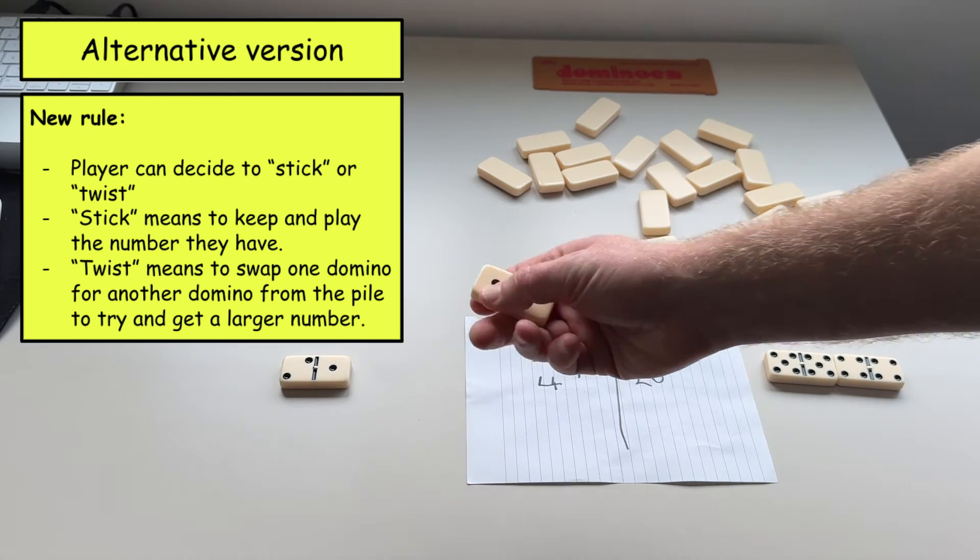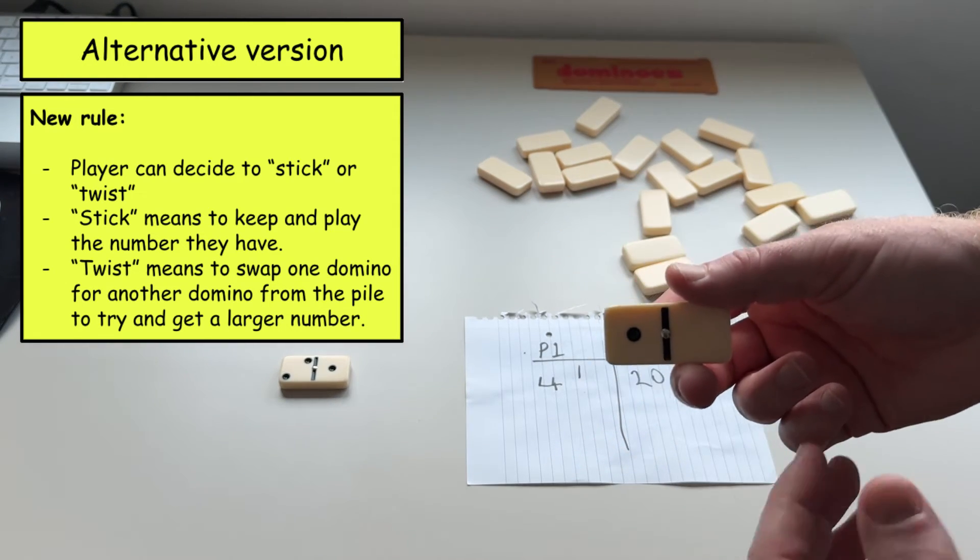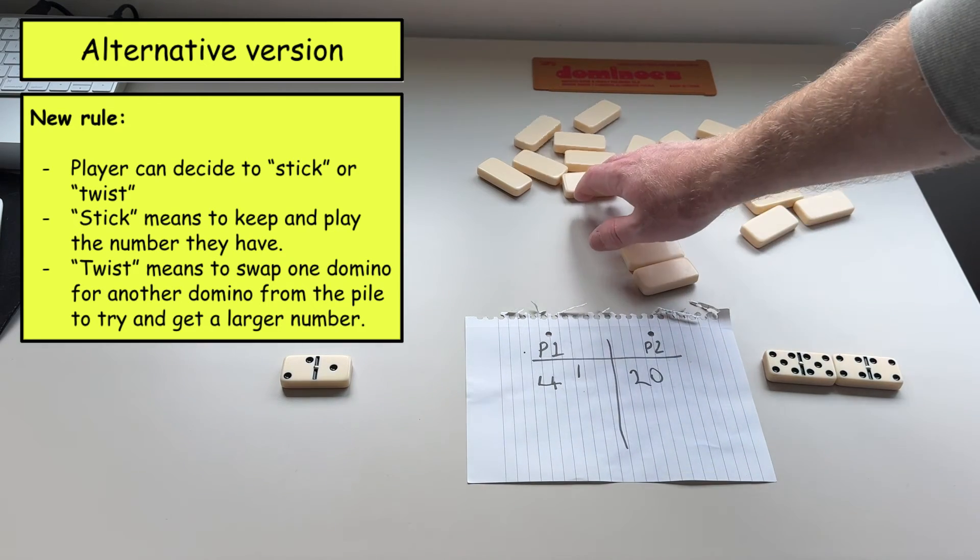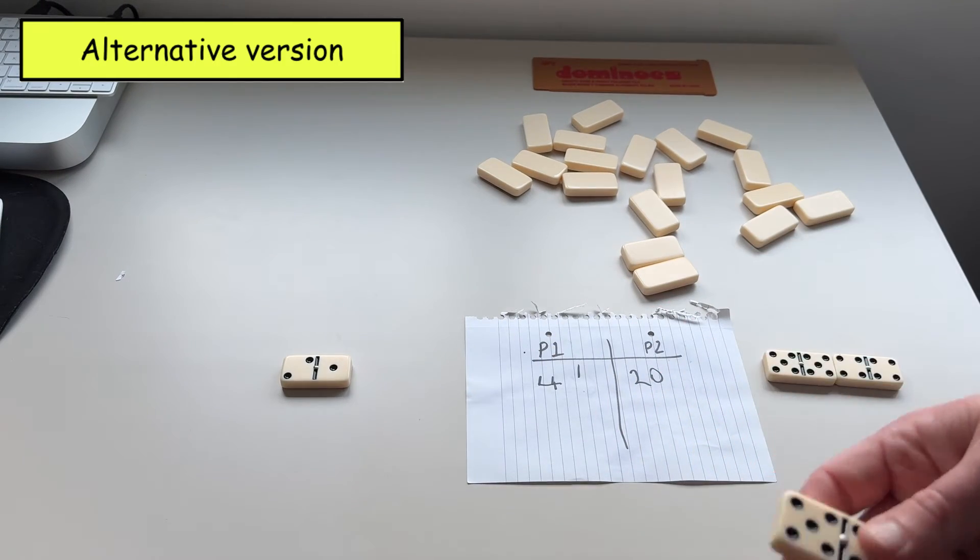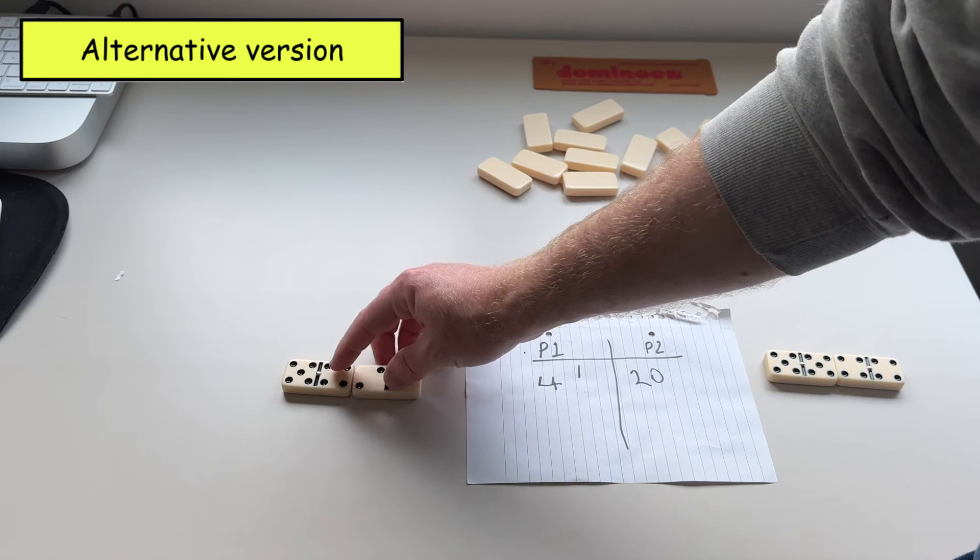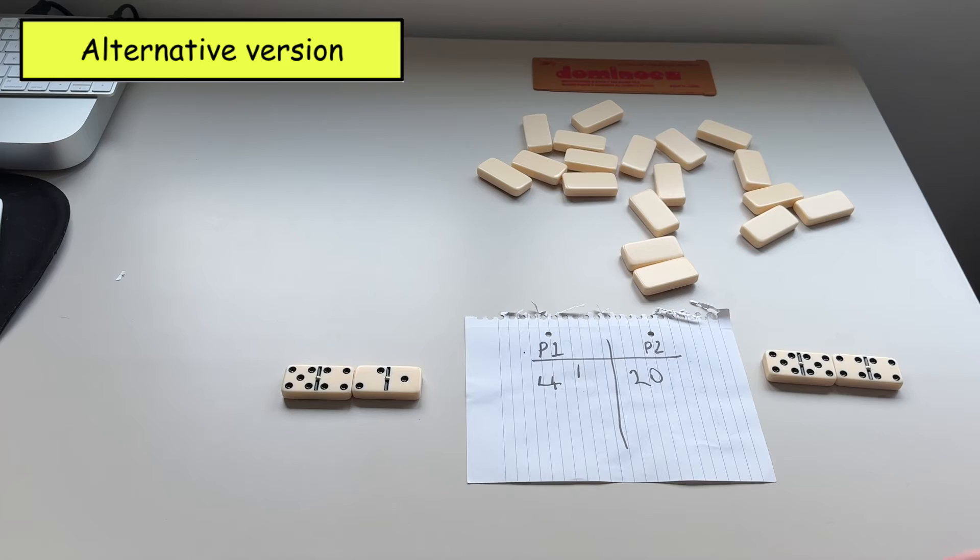Now player one they've got a low number and they probably feel that they have a small chance of winning. So what they can do is they can twist. So they can choose one domino that they have and they can put it back into the dominoes pile and they can pick another one at random to try and improve their number.